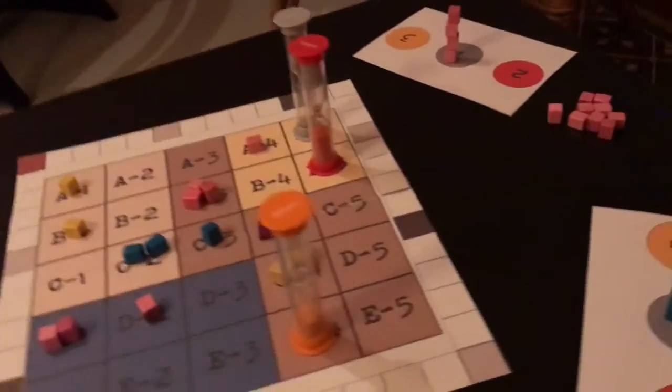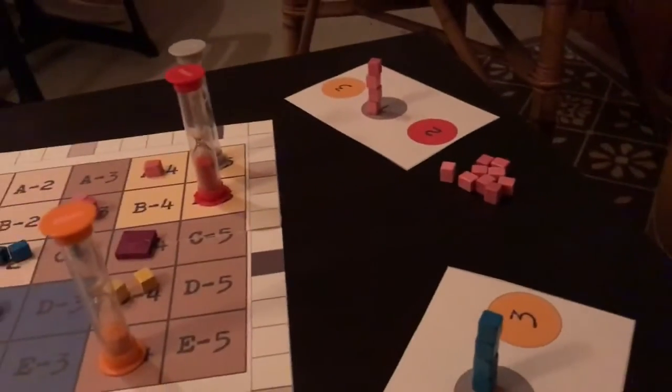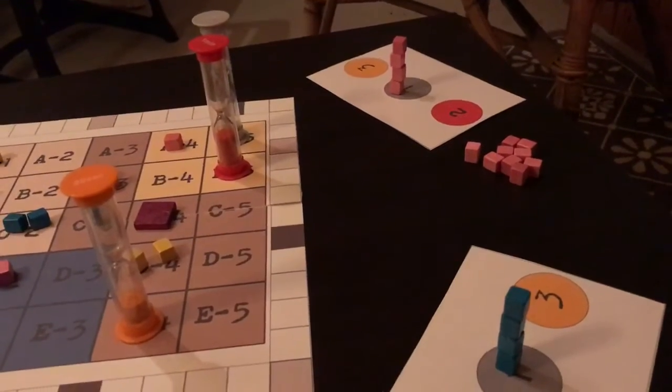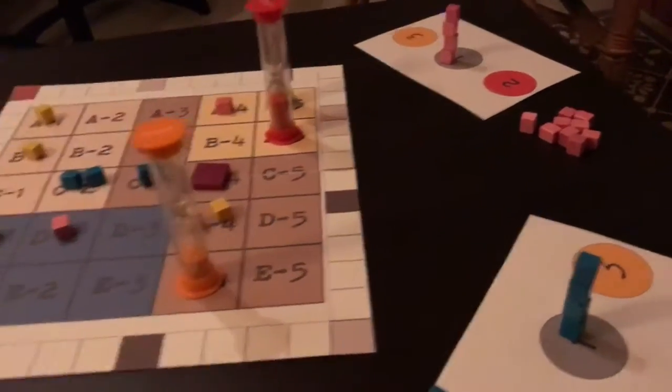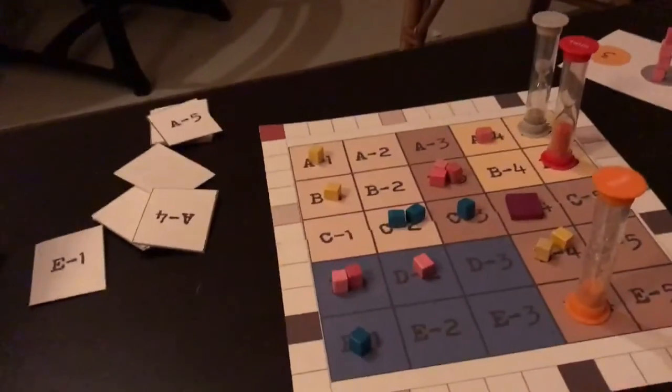But there's a very unfriendly tie rule which says that if two players or more have the same height tower, then the next player down gets to earn the placement.